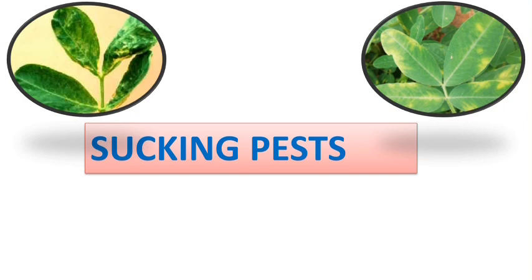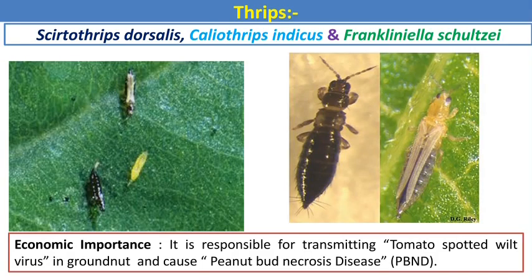The first category of major pests is the sucking pests. In groundnut there are three major sucking pests which infest the groundnut crop area. The first is thrips, then aphids and leafhoppers. The first and major pest is thrips. There are nearly three species of thrips which infest the groundnut crop: Scirtothrips dorsalis, Caliothrips indicus, and Frankliniella species.